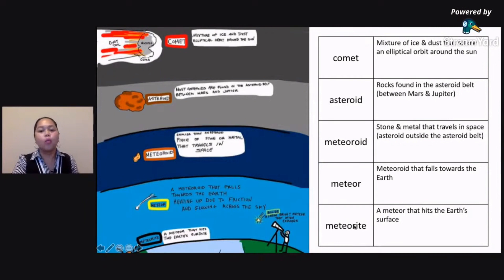That's your meteor. Now, once it reaches the surface of the Earth, pag nahulog na siya sa surface mismo ng Earth, then you'd call it a meteorite. So these are the five different terms that you'd come across in the left. And these five different terms are going to be asked from you. These are going to be compared.